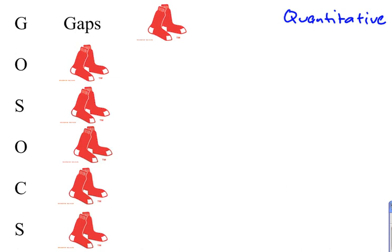Well, the G in Go Socks stands for gaps. Are there any gaps in your data? We'll analyze something here in just a little bit, but are there any gaps in your data?